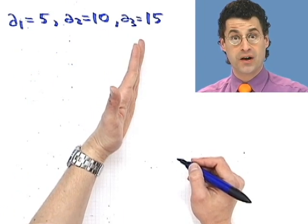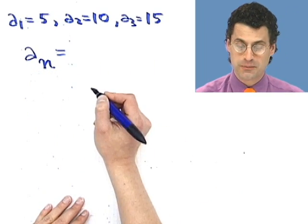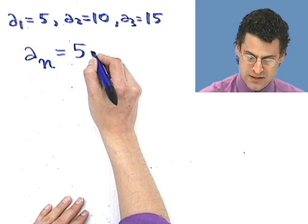Well, it seems like these are just the multiples of 5. And so a good guess might be a general formula, a sub n, would just be 5 times n.